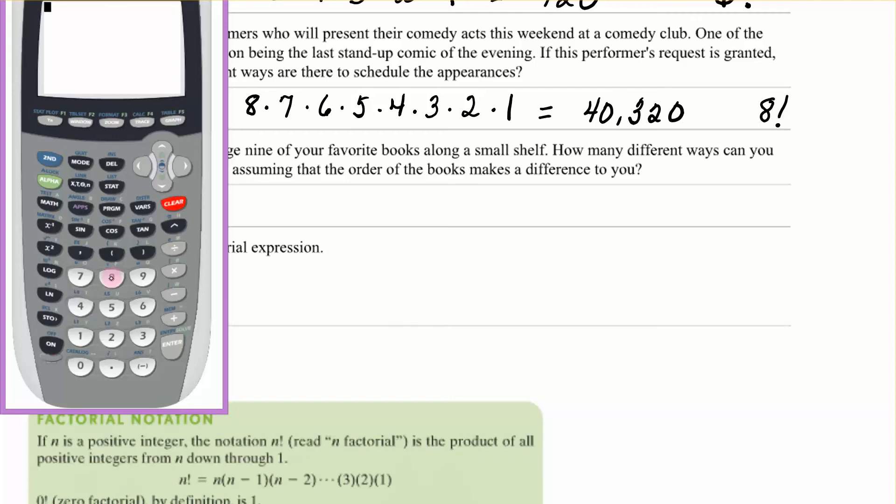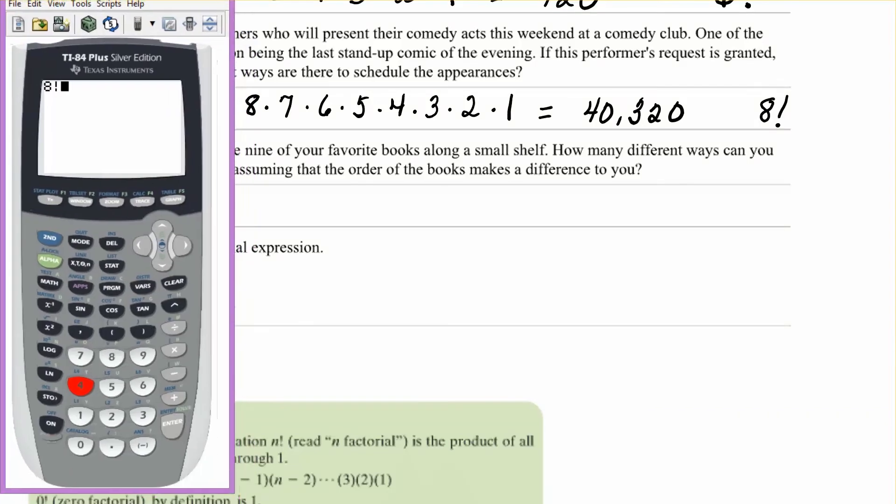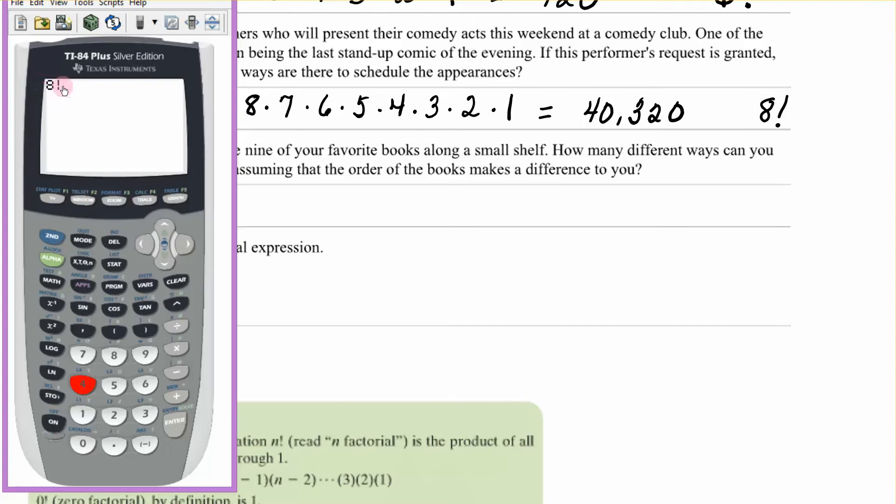If I put in an eight, and now I do math, probability, choice number four. Now it says eight factorial. Press enter, and there is our number, 40,320.